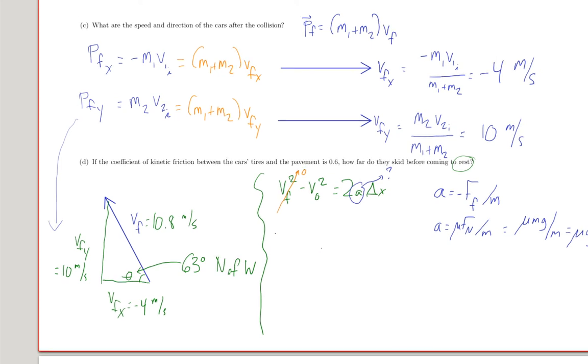So this gives me that minus v-naught squared equals 2 mu g delta x. So delta x, the minus signs will cancel, is going to be v-naught squared over 2 mu g. Let's put in those numbers.